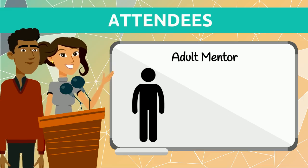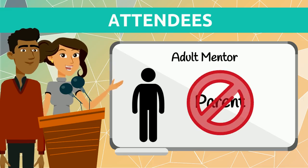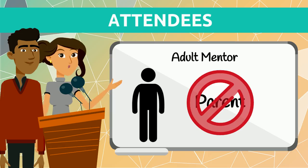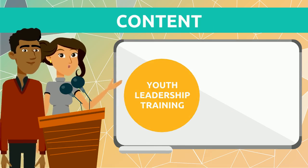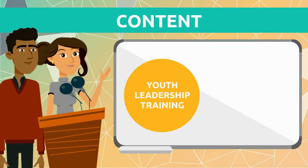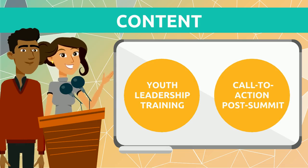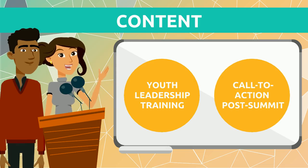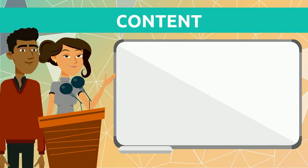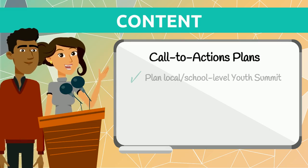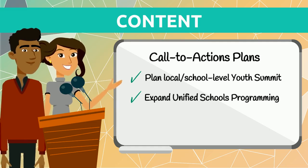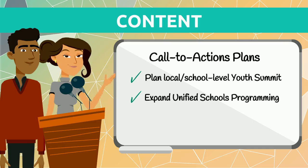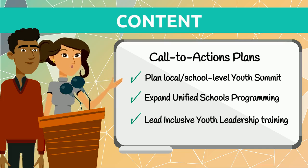It is strongly encouraged that the adult mentor not be a parent of one of the youth leaders. The content of a program-level Youth Leadership Summit should include a youth leadership training and time for participants to prepare plans for their call-to-action post-summit. Call-to-action plans could include preparing for a local or school-level Youth Leadership Summit, expanding Unified Schools or Unified Champion Schools programming, or leading an inclusive youth leadership training.